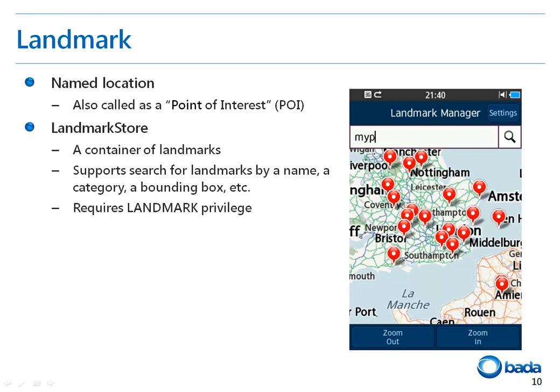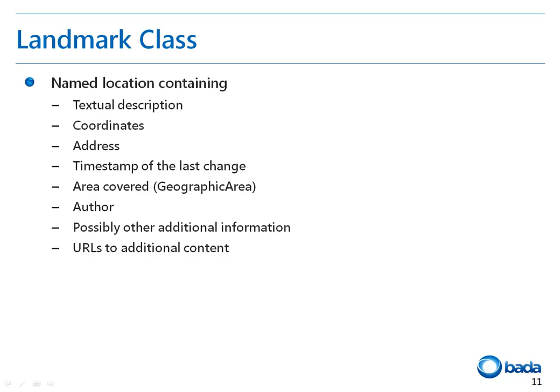Now let's look at what a landmark is. A landmark is a known location with a name, also called a Point of Interest or POI. LandmarkStore is a container of landmarks which supports searching for landmarks by name, category, or bounding box. The privilege needed for landmarks is Landmark. A named landmark mainly consists of a textual description, coordinates, address, timestamp of the last change, the geographical area covered, author, and URLs for additional content.